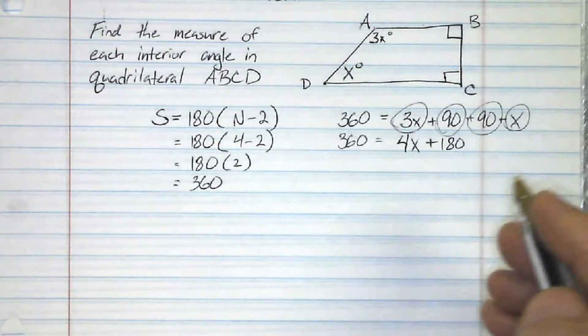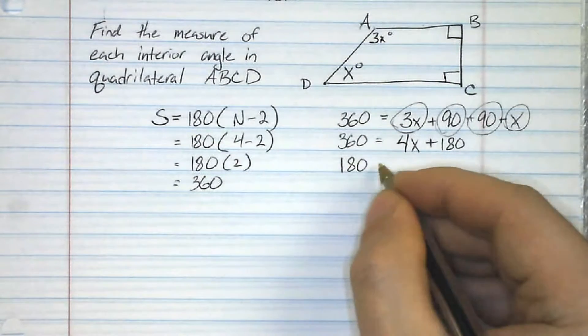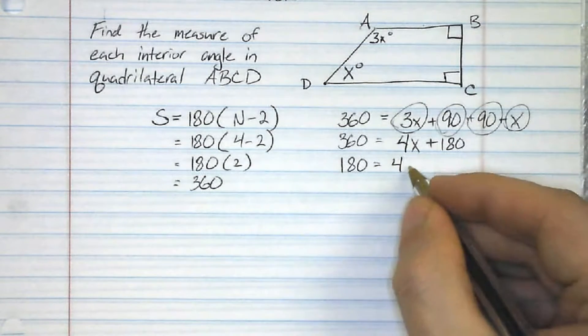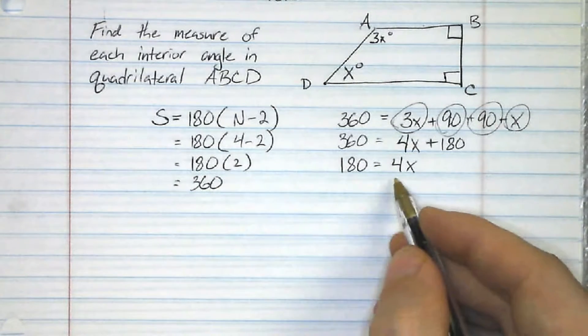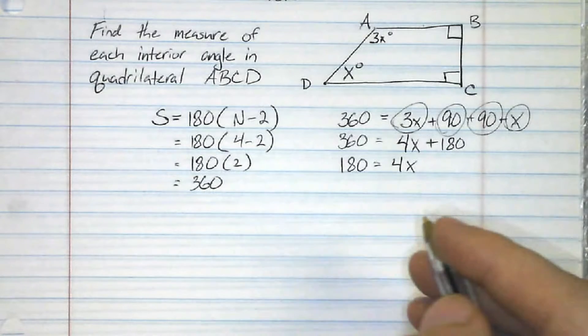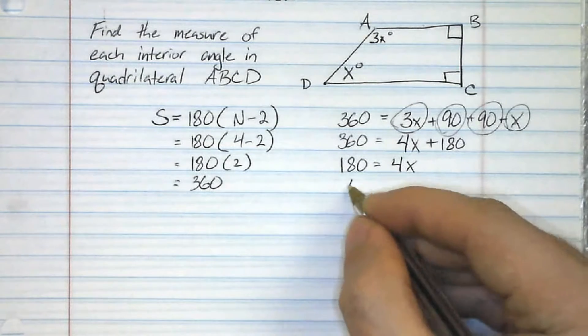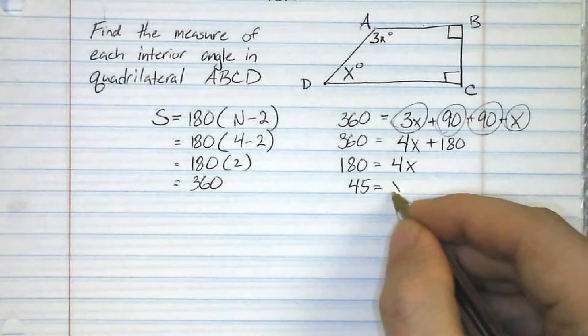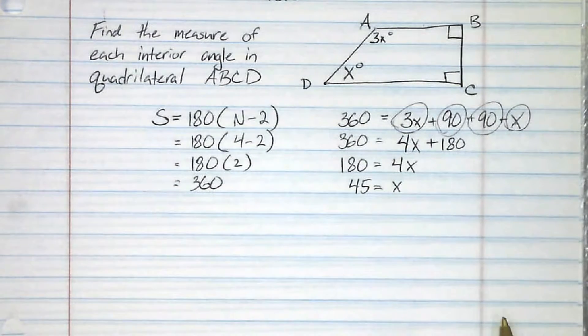Now I'm going to take away 180 degrees from both sides, I end up with 180 equals 4x. And now I divide both sides by 4 and I end up with 45 equals x. Now I'm not finished yet.